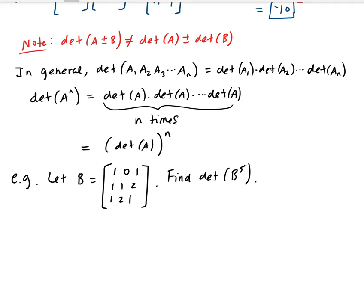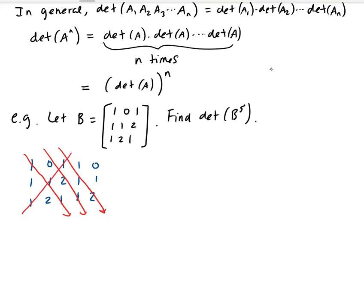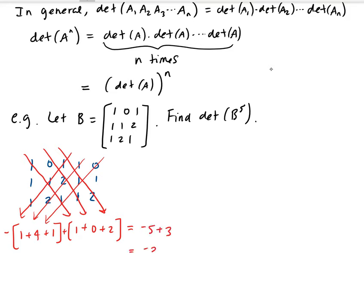We can use the diagonal method to find the determinant of this matrix. Writing out the matrix with the first two columns repeated: the positive diagonals give us 1 times 1 times 1 = 1, plus 0 (from the zero entry), plus 2, totaling 3. The negative diagonals give us 1 plus 4 plus 1, totaling 6. So the determinant is negative 5 plus 3, giving us negative 2.